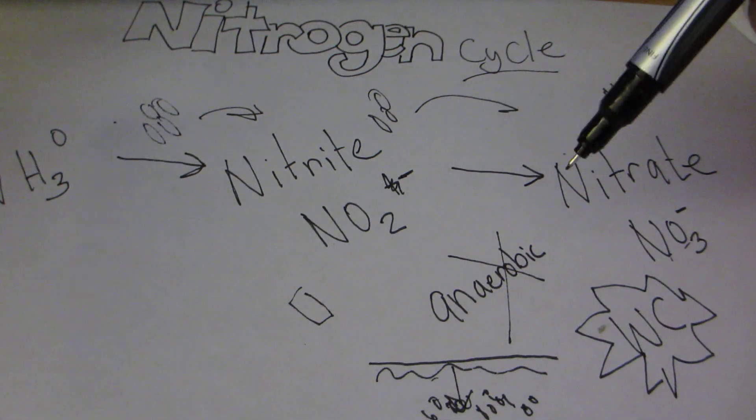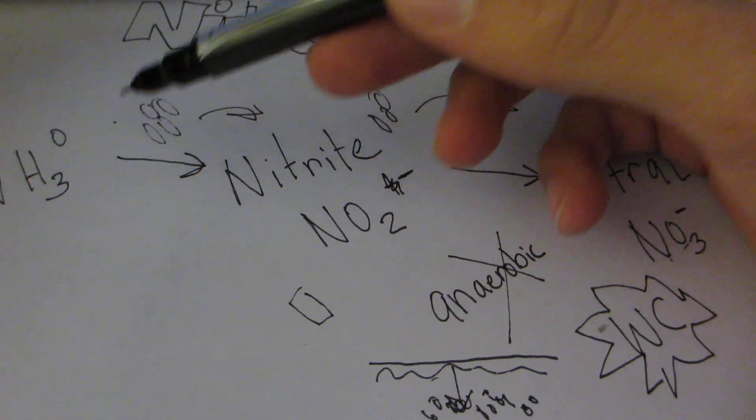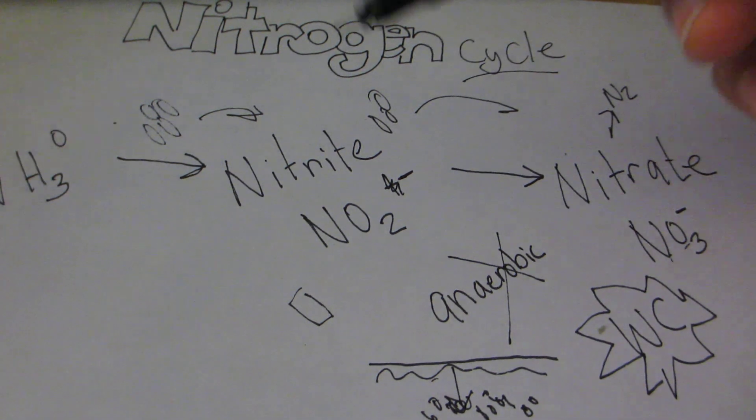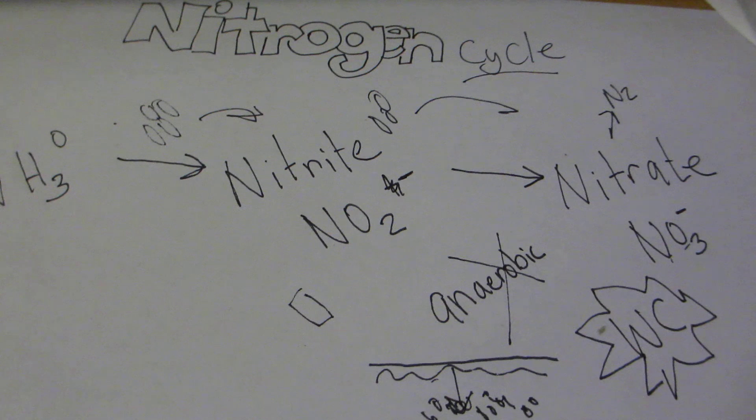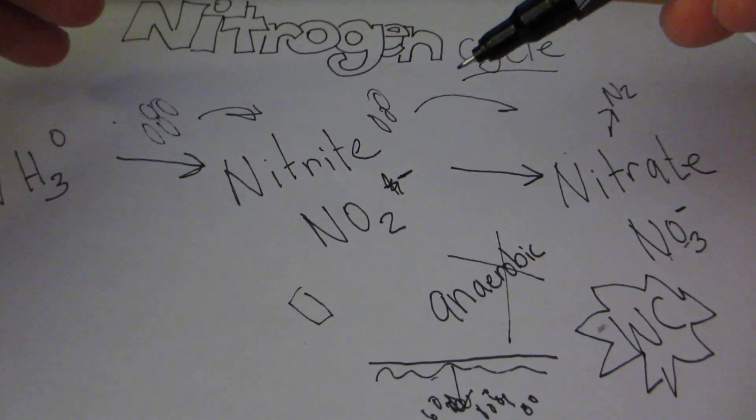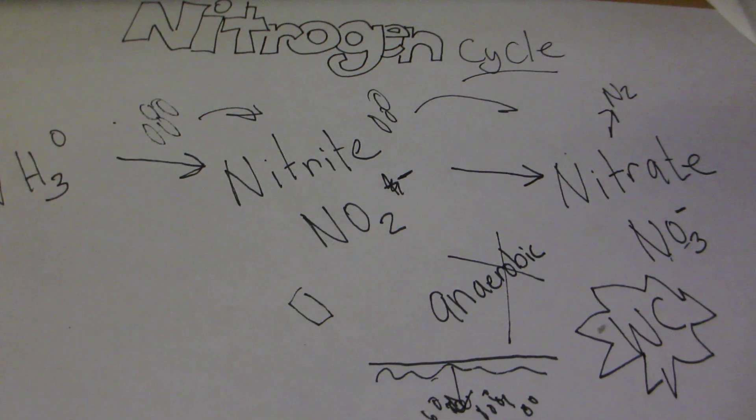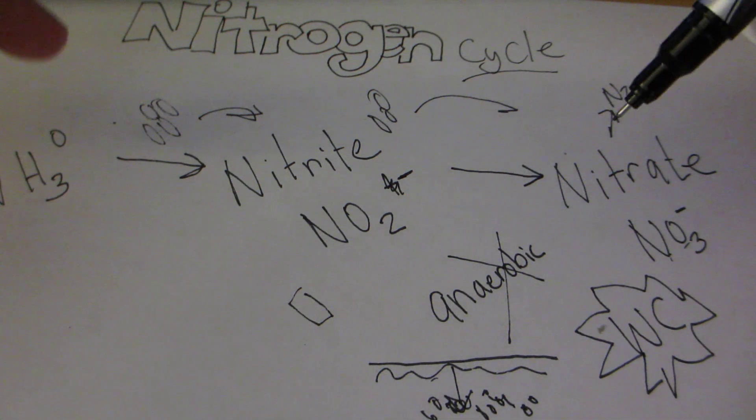Now how do you detect nitrate, nitrite, ammonia? The thing with nitrogen compounds is that they're all soluble with water. For our purposes, they are water soluble. They are colorless, odorless, and tasteless, so you can't drink your fish water to find out if there are nitrates in there.